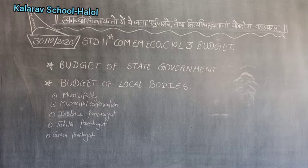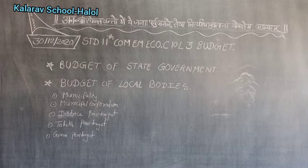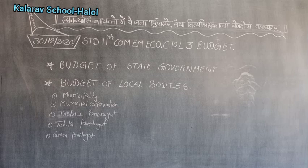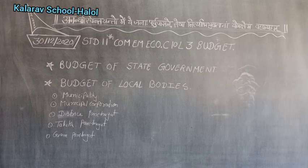Now, the capital account: on the credit side, meaning income — grant received from the state government, capital gain from property owned by the corporation, borrowed capital, and other capital income — for example, fund for housing scheme from the state government. On the expenditure side: expenses on infrastructure, purchase of transport vehicles, purchase of machinery, tools and equipment, and other expenses.